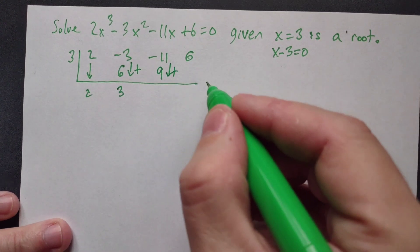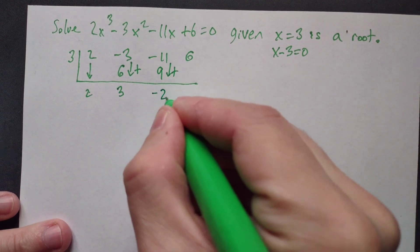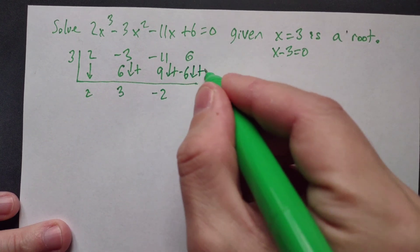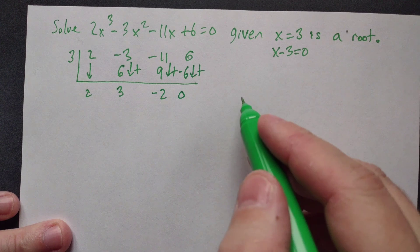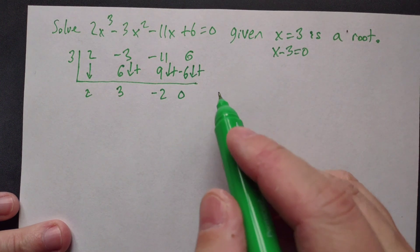Add straight down: -11 + 9 = -2. Then -2 times 3 = -6. Add straight down to get 0. That's correct because 3 is our root, so the remainder should be 0.